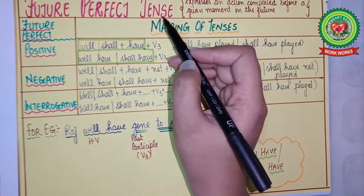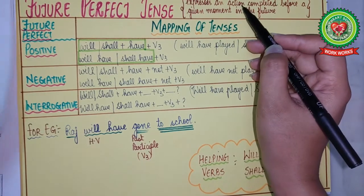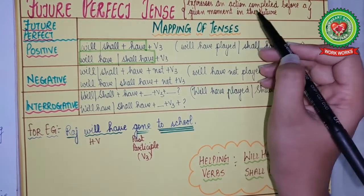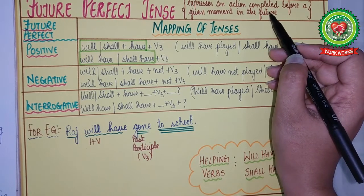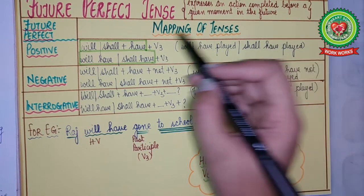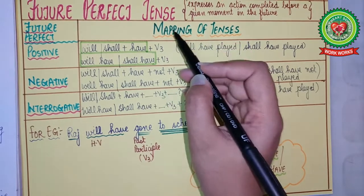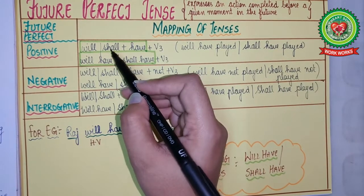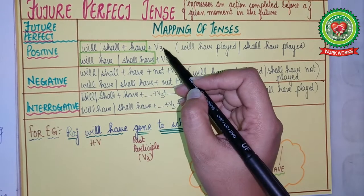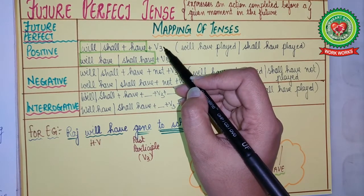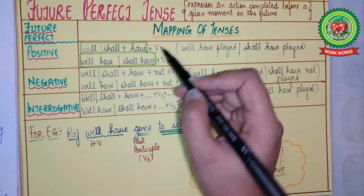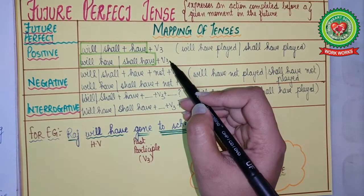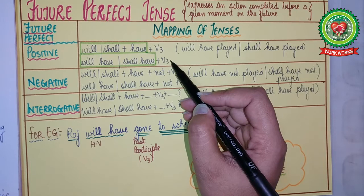Future perfect tense expresses an action completed before a given moment in the future. The rule from the mapping is: will/shall plus have plus past participle form of verb (V3). In other words, will have or shall have plus past participle form of verb (V3).